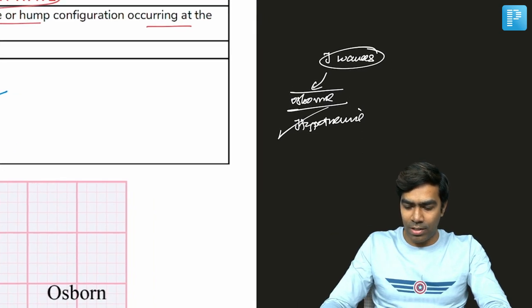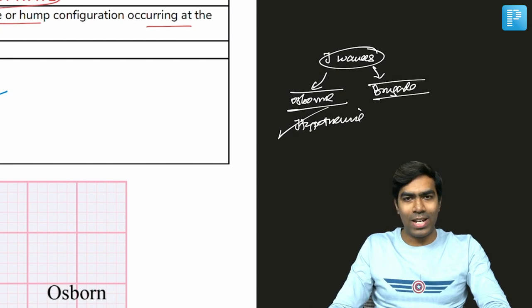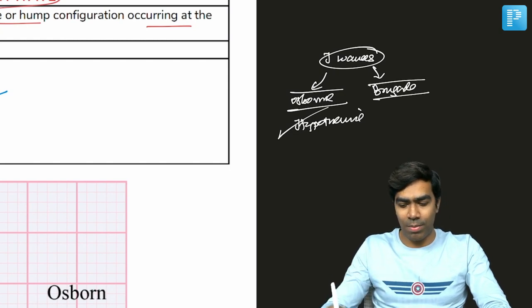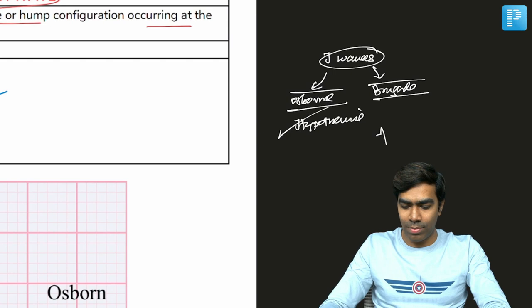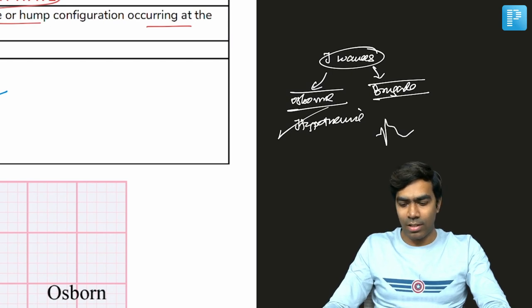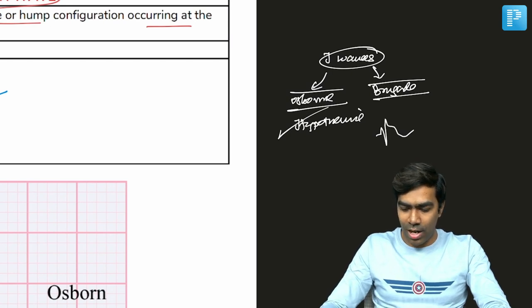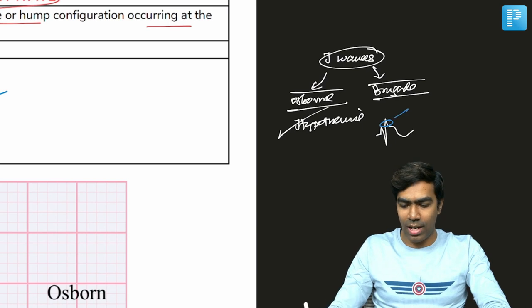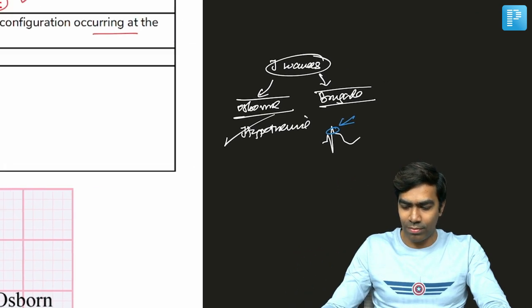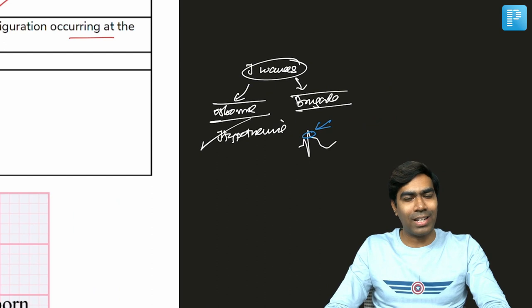So apart from that, in Brugada syndrome, you can see the pseudo-RSR pattern. You are going to see something like this. The pseudo-RSR pattern, the pseudo-RSR is a kind of a J wave. So Brugada syndrome is a kind of J wave syndrome.